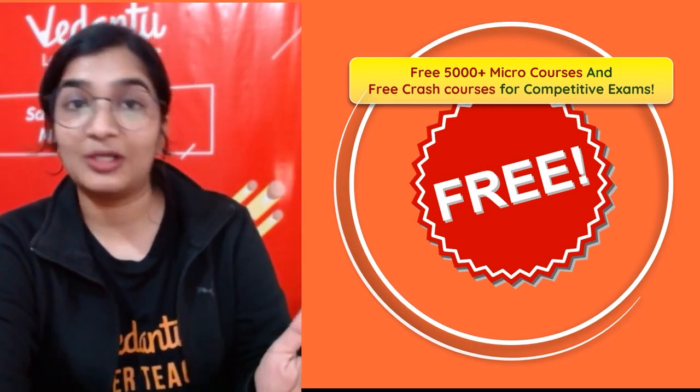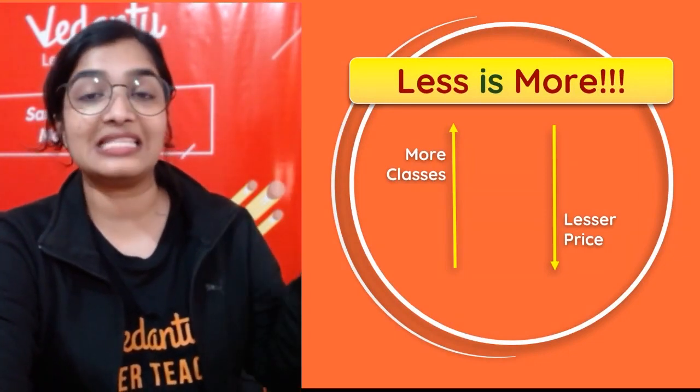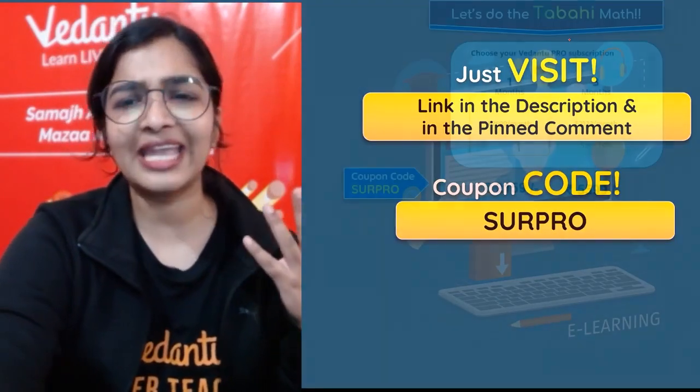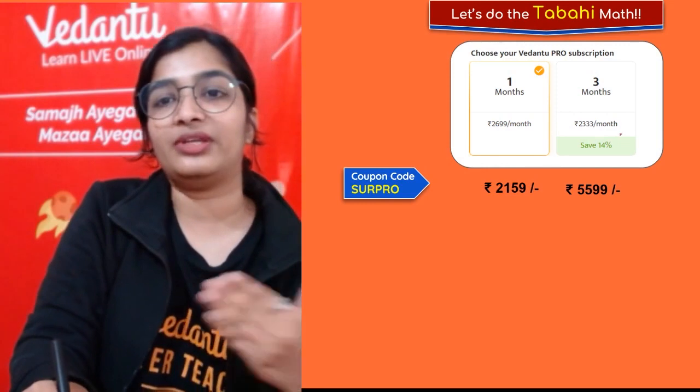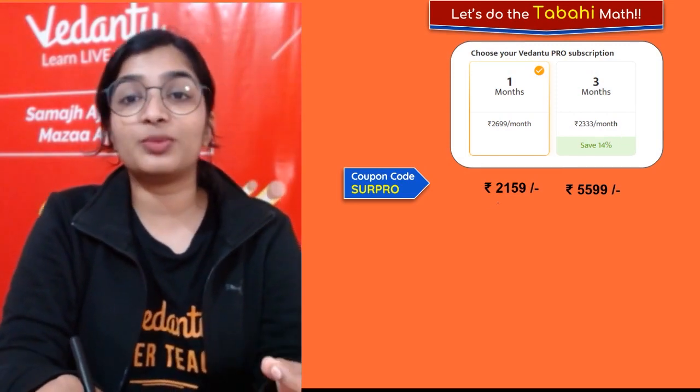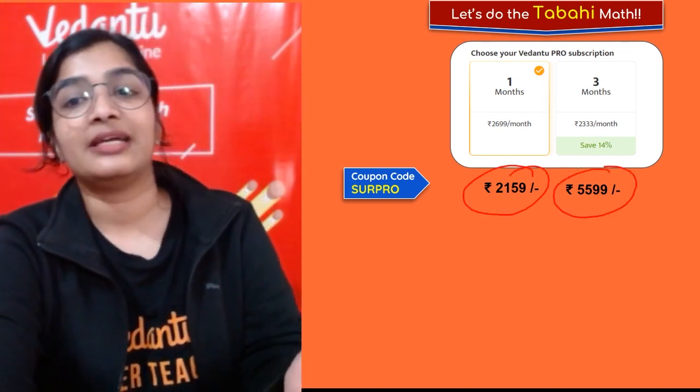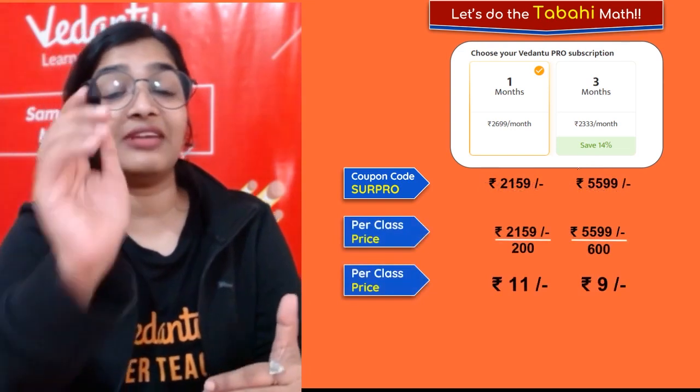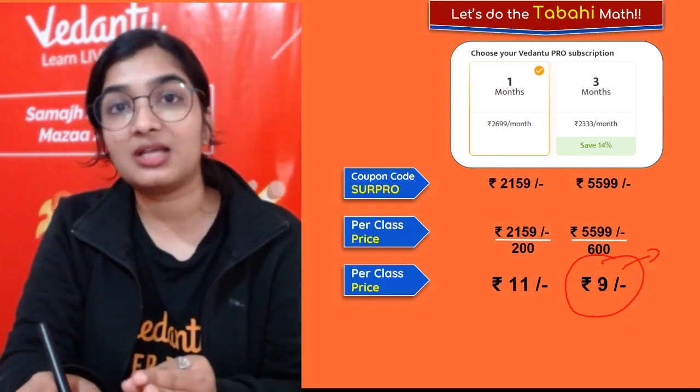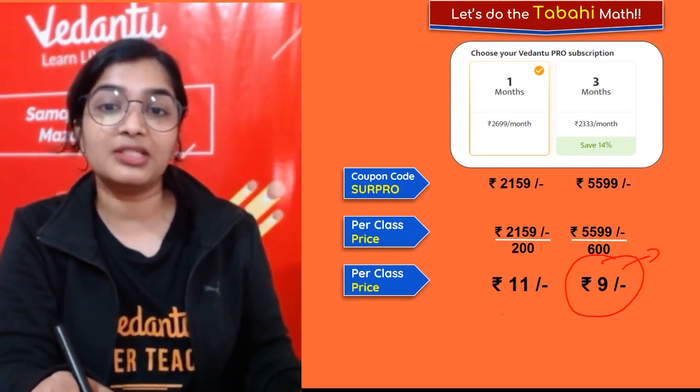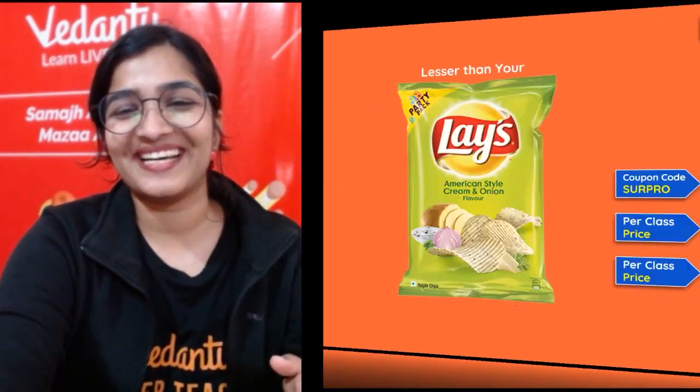Go to the description, you will find the link there. The only platform where less is more. What does it mean? The one month subscription costs you 6,199 or 2,333 per month, but if you use the coupon code S-U-R-P-R-O, you will get it only for 2,159, and 5,599 for three months. You will be saving money. Per class, if you take up the three month subscription, each class costs you only 9 rupees, but for one month it is 11 rupees. So more classes, less amount. The coupon code is SURPRO.